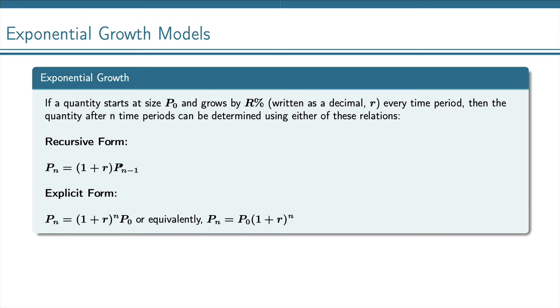We have our recursive form, which simply says take the amount that we have and multiply by 1 plus r, and that will give us the amount for the next time period.